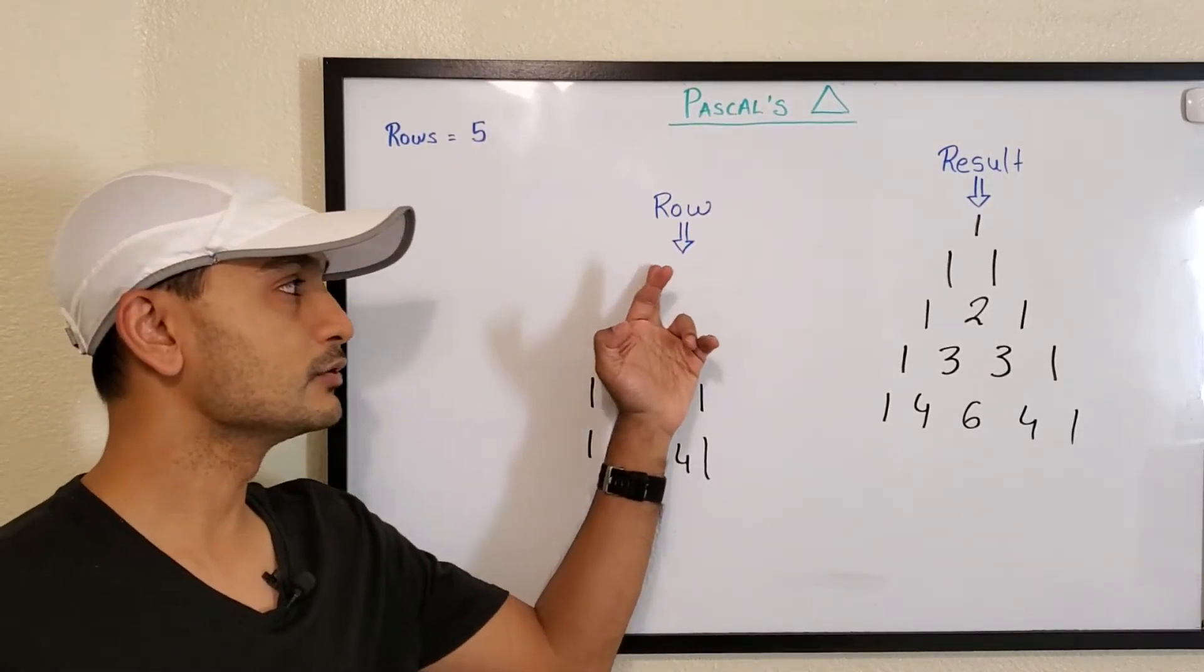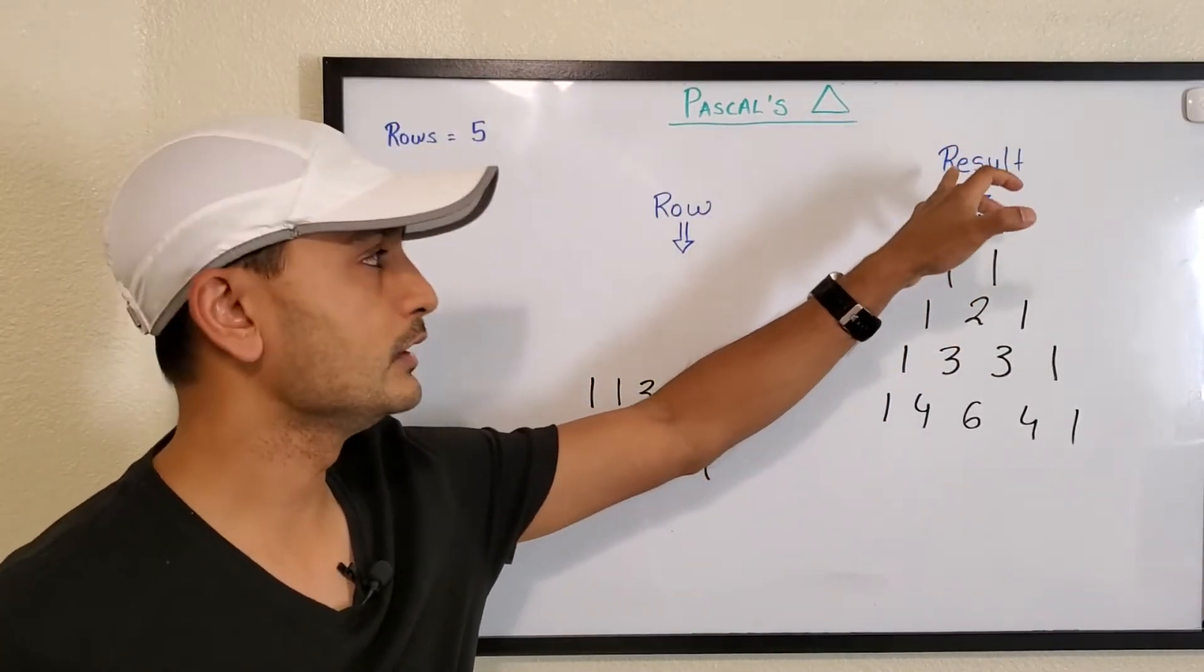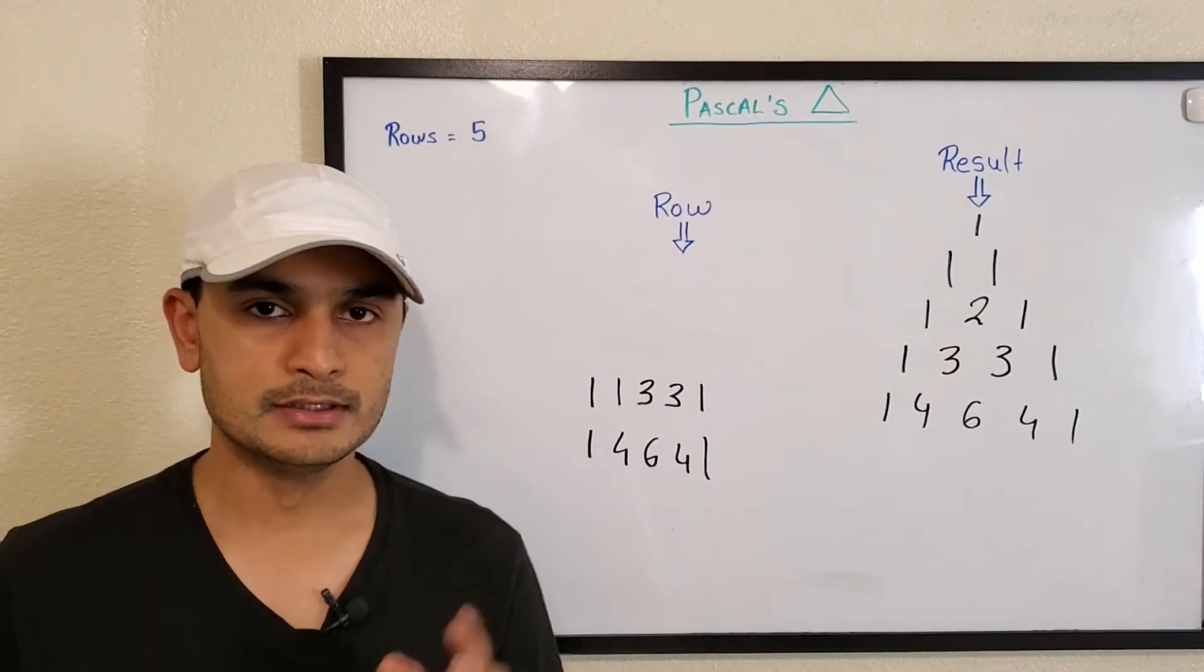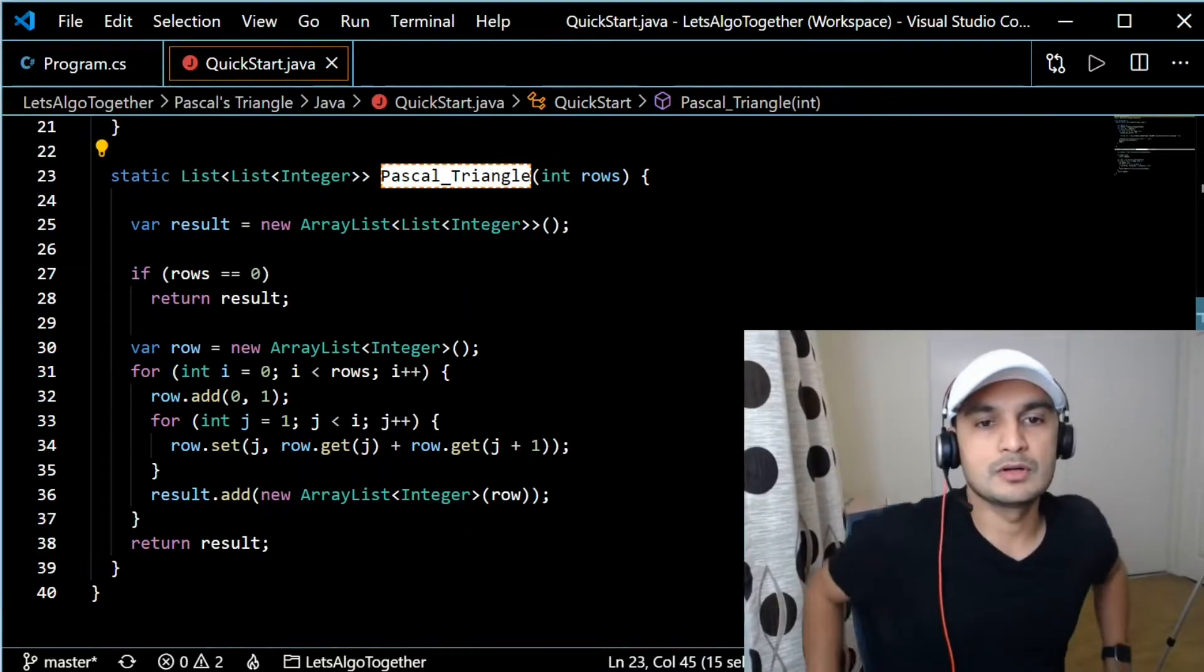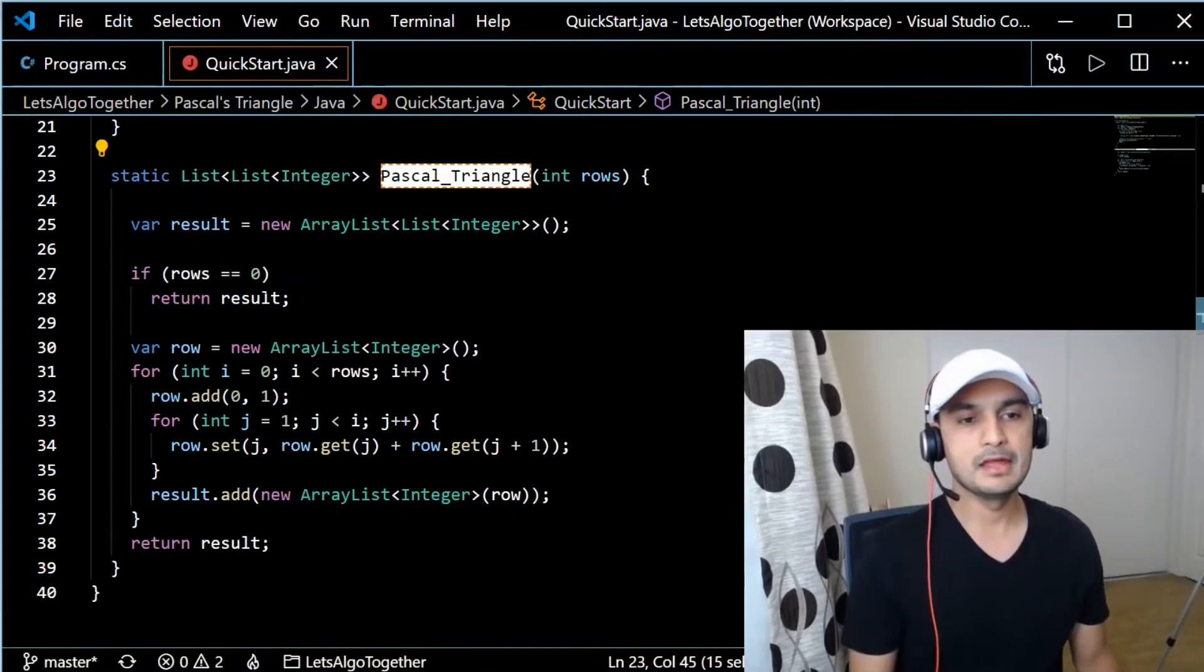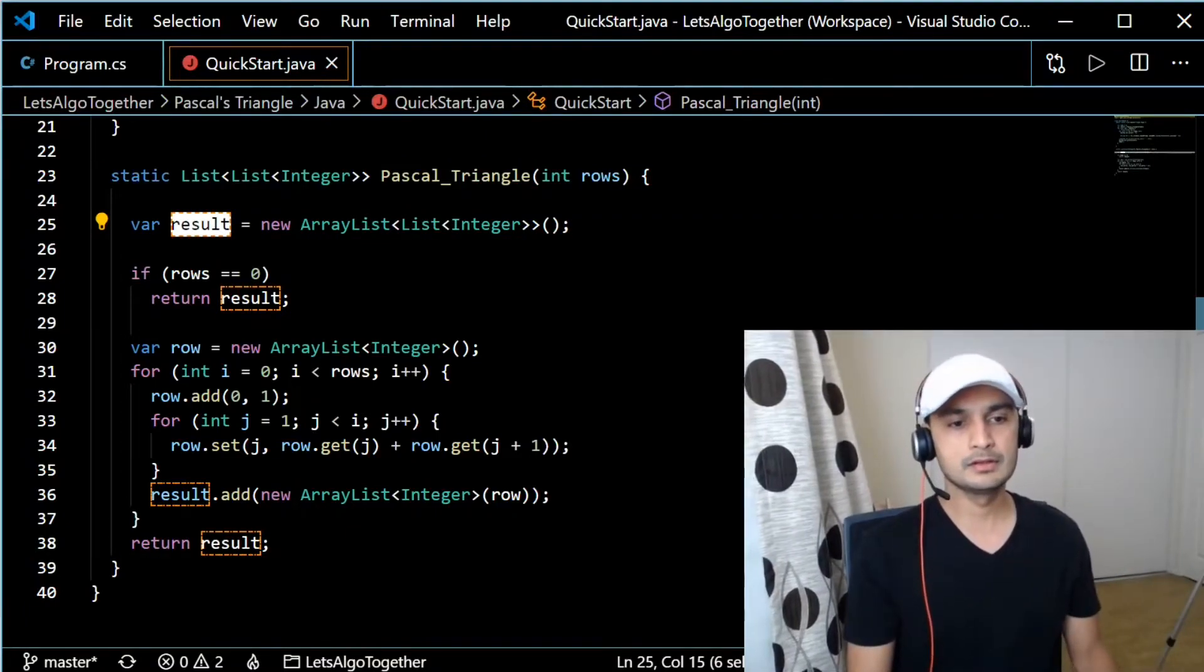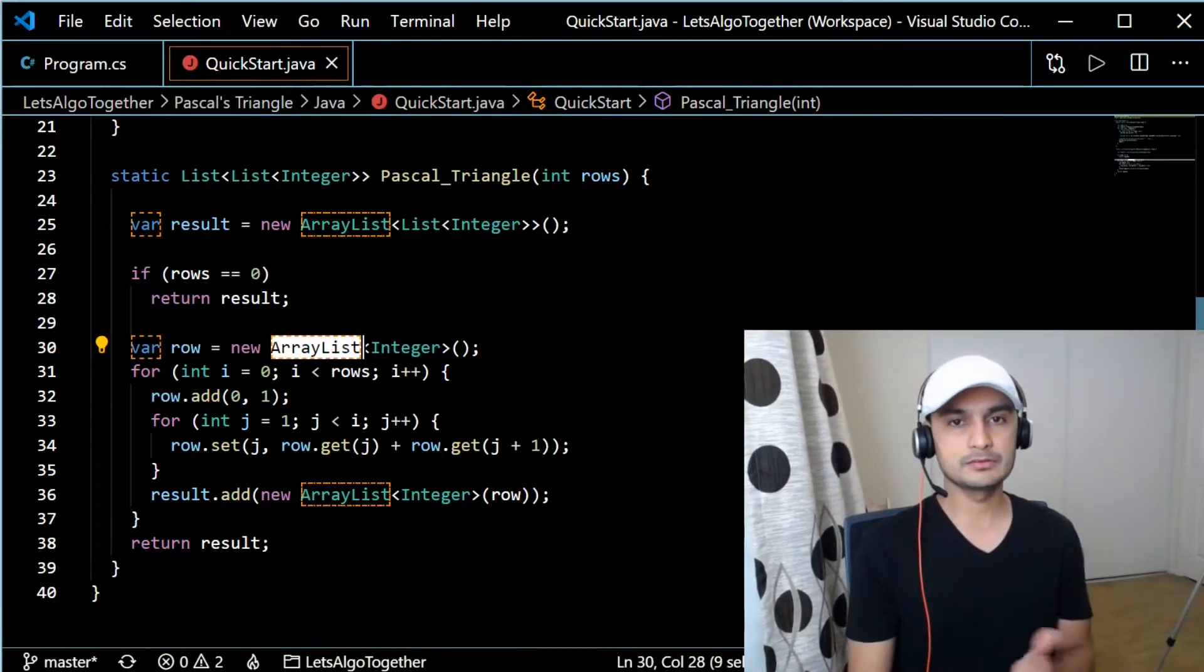Let's make sure that we are able to handle the list of integer and then list of list of integer to hold the result and how we actually do it. Okay, so this is our Java code for Pascal's triangle. We are having a result array which is like list of list, and then we have row which is our list of integer.